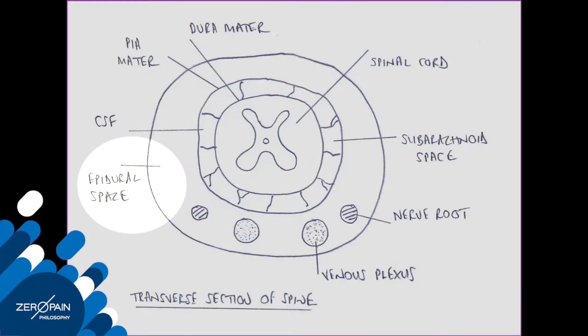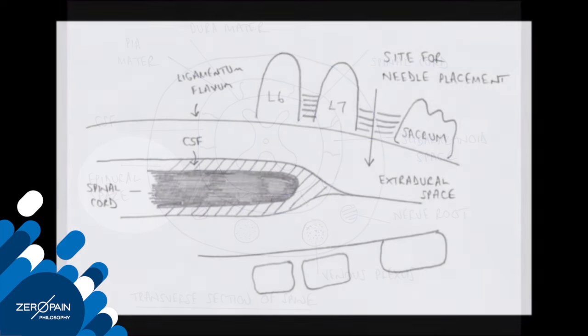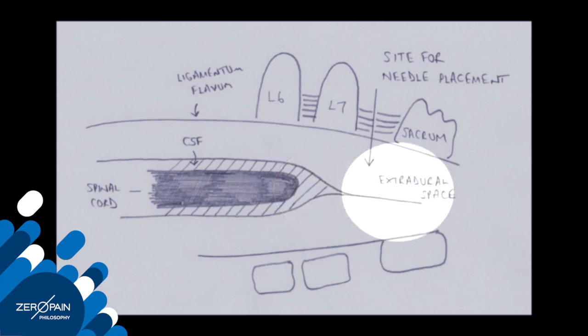This schematic depicts the epidural space in transverse section. At this level the spinal cord tapers to the phylum terminale and you are unlikely to encounter CSF. The epidural space is filled with fat and is under negative pressure.